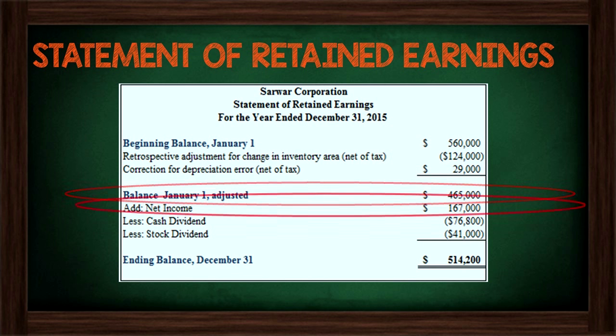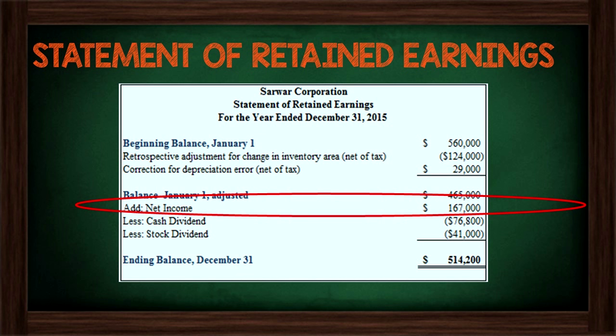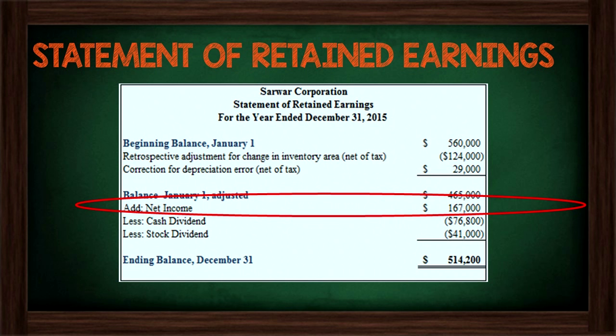The fourth step is to add or subtract our net income or net loss. Remember that revenues and expenses are closed off to retained earnings — the net effect of closing all revenues and expenses is the same as simply adding or subtracting net income or net loss. Rather than listing all revenues and expenses again on this statement, we summarize it and just show net income or net loss, since we've already shown that detail in the income statement. In this case, we had a net income of $167,000, which we add to our adjusted beginning balance.